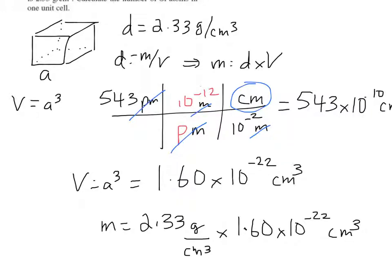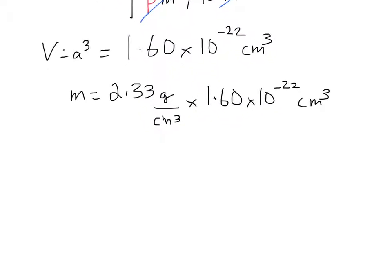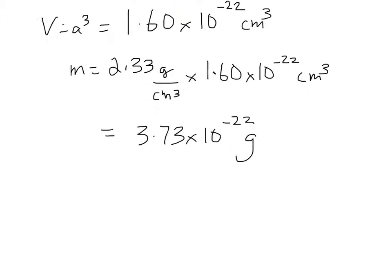And so if we multiply those, we'll get the mass in grams. And so I make that 3.73 times 10 to the minus 22 of a gram. Cool. So that's the mass of the silicon.